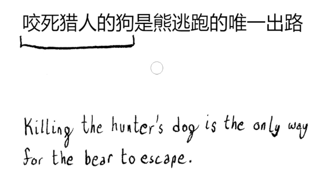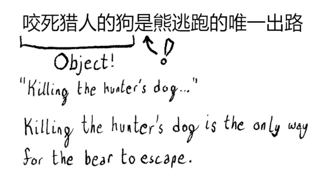However, 咬死猎人的狗, killing the hunter's dog, is actually the object, describing the only way for the bear to run away. And the way here is actual subject. As in, for the bear that killed the hunter's dog, this is the only way to run away.